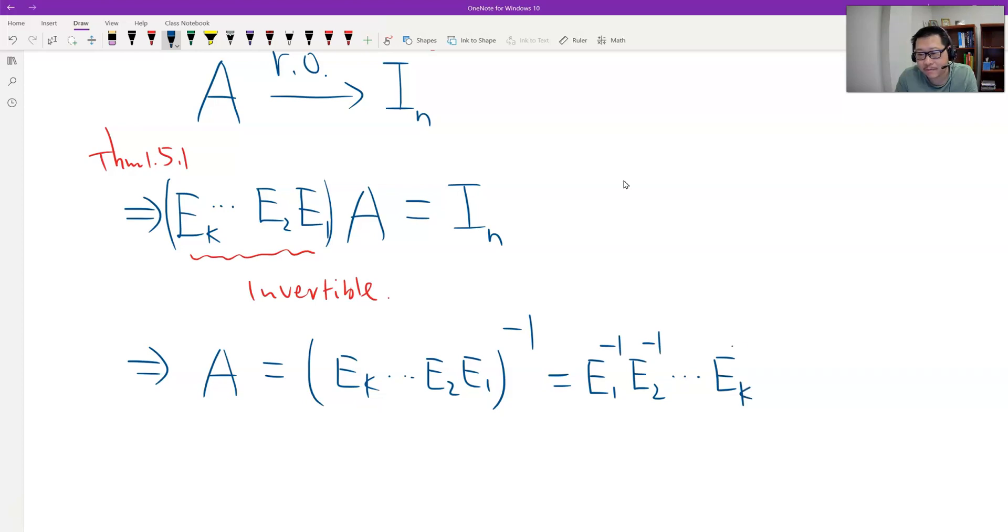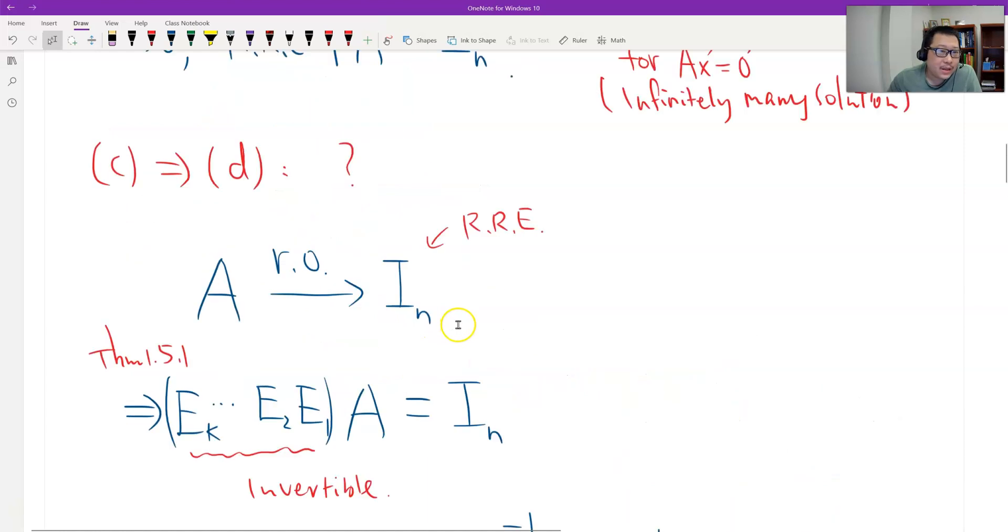So I change the order, which is EK inverse to E2 inverse to E1 inverse. Is each one elementary? Yeah, definitely. So this is elementary, this is elementary, each one is elementary. That's all elementary matrix, because of the previous theorem 1.5.2 we just had. So that's the proof. For A, break it down into elementary matrix products. And then we have the last.